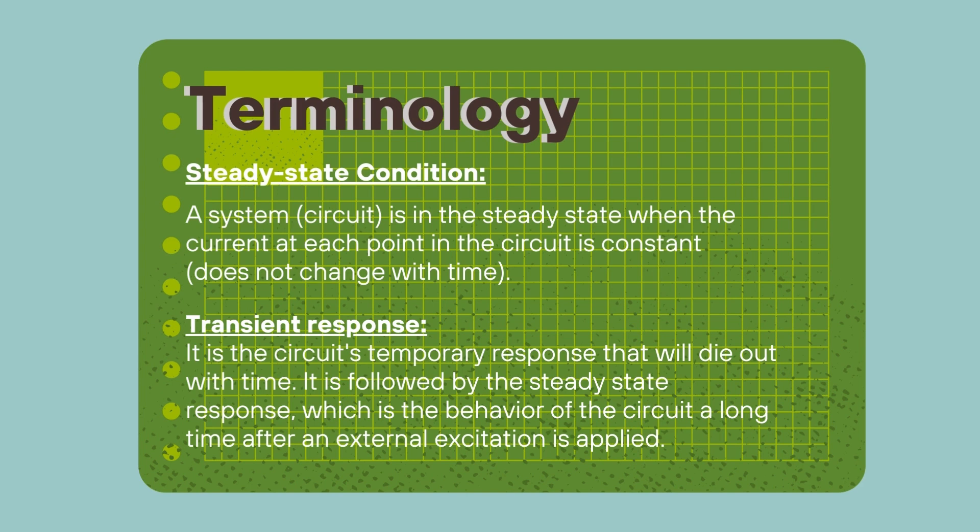First, we have the steady state condition. A steady state condition is when a system, i.e. the circuit that we're dealing with, is in steady state. And what that means is that the current at each point in the circuit is constant. Steady state is not just a concept in electrical and electronics engineering, or in circuit theory. It's prominent in a lot of engineering theory. And it basically means that the variables are stable or constant, meaning that there is no changes in the variables of the system.